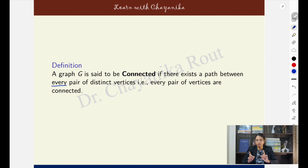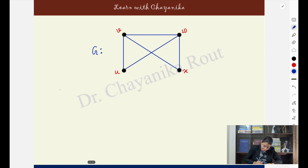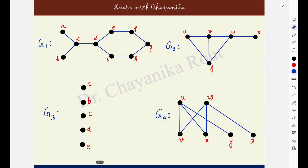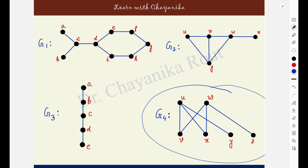You have to ensure that for every pair you pick, there is a path. For example, in this graph, vertices u and v have a path between them, so they are connected. Similarly, u and w, u and x, v and w, v and x, w — any pair of vertices you pick from this graph, there is at least one path between them. Hence every pair of vertices are connected here, making this a connected graph. The four examples shown are all connected graphs.